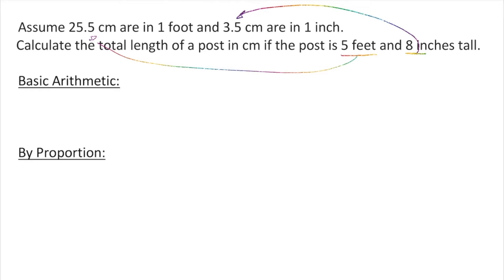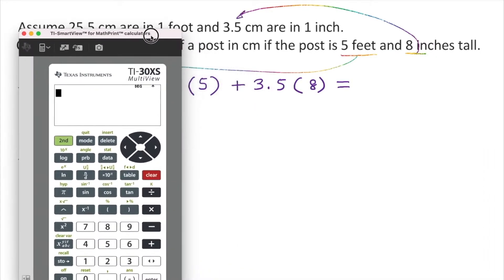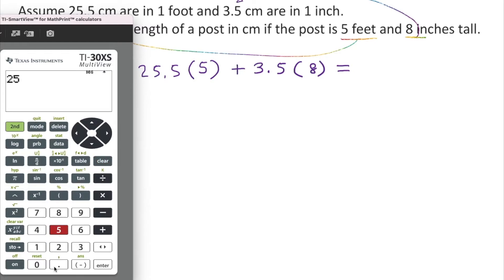So 25.5 times 5 feet, plus 3.5 times 8 inches, will give us our answer. So we have 25.5 times 5 plus 3.5 times 8, so the length is 155.5 centimeters. That's the length - remember we're looking for centimeters.